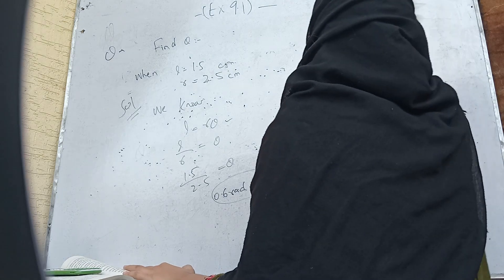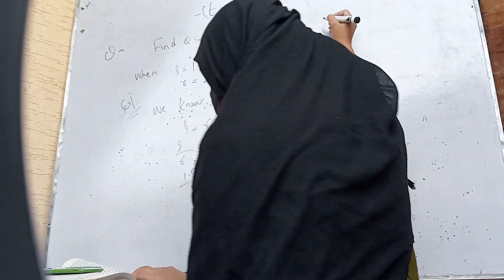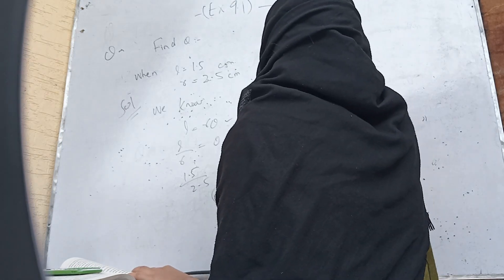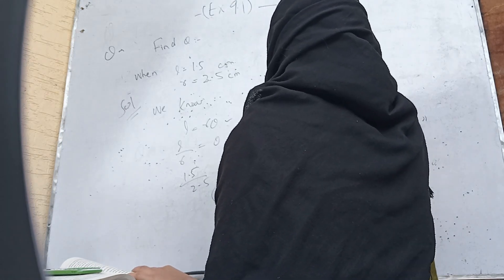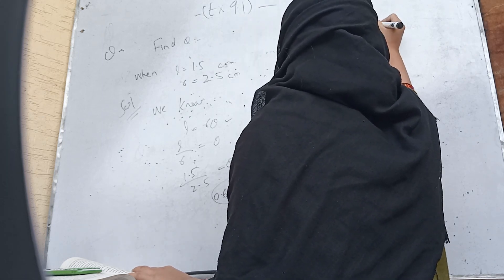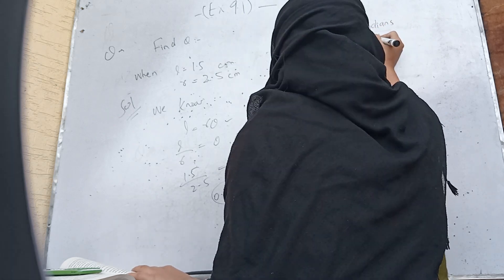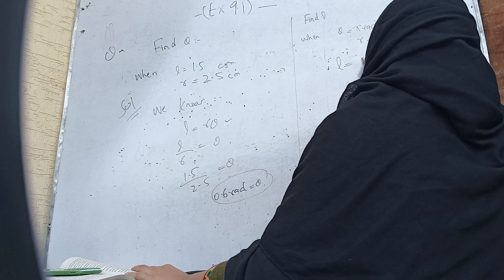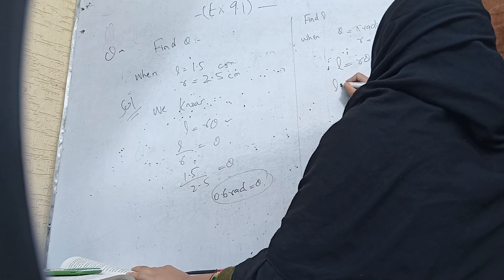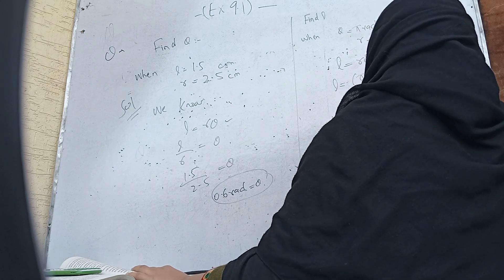The next question: find l when θ = π radians and r = 6 centimeters. We know that l = rθ, so l = π × 6. The required answer is 6π centimeters.